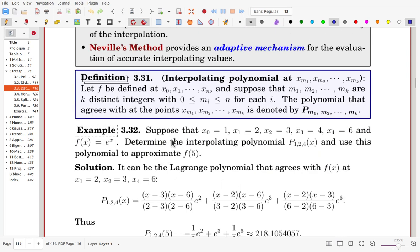Let's see this example. x0 is 1, x1 is 2, and x1, x2, x3, x4, and the underlying function is e to the x. Now, let's try to determine the interpolating polynomial P1,2,4, and use this polynomial to approximate f(5). P1,2,4 means that we are using x1, x2, and x4.